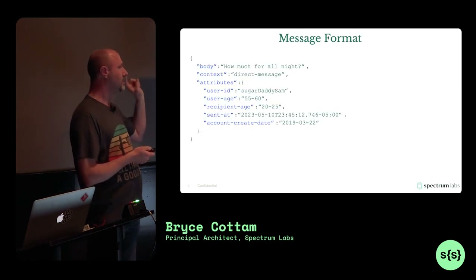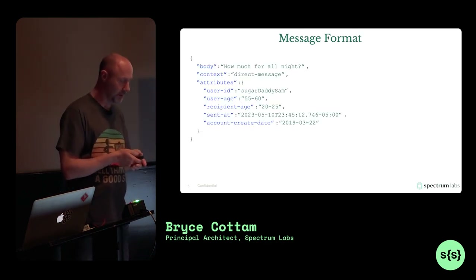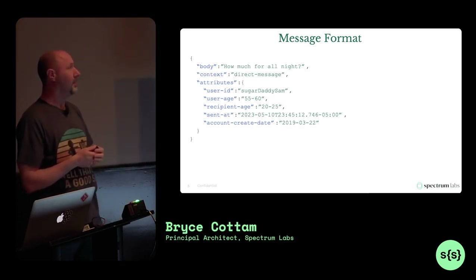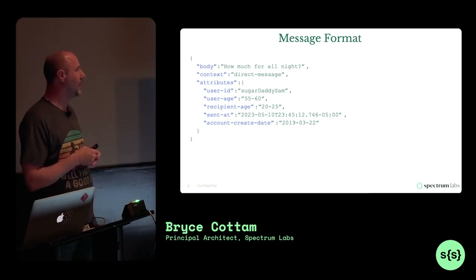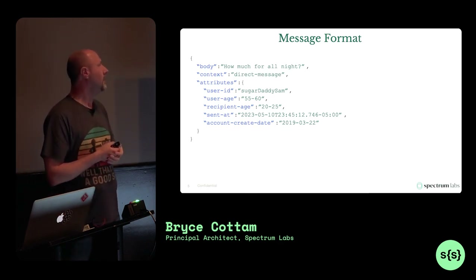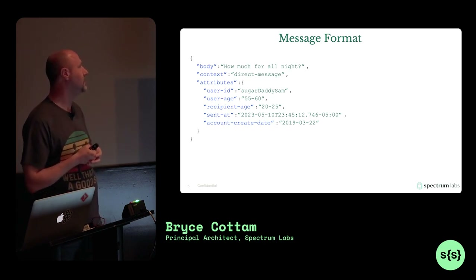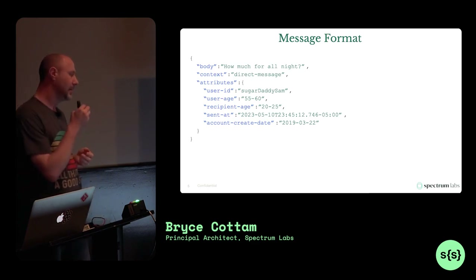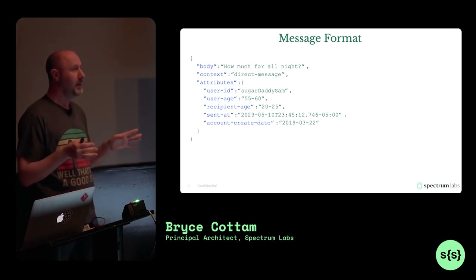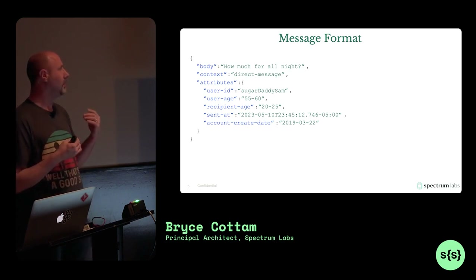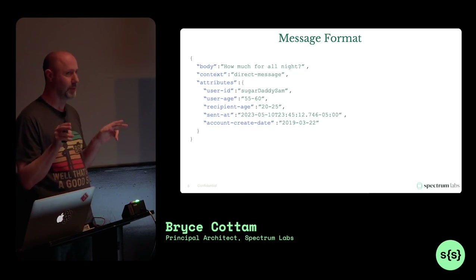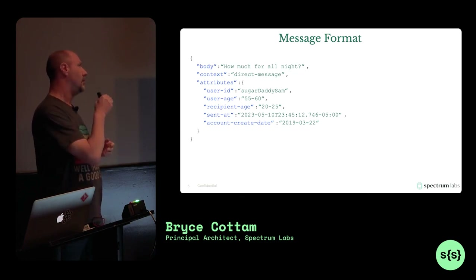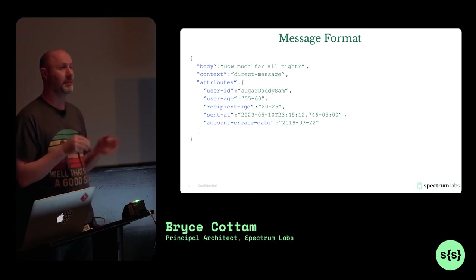Let's start with the schema of the payload we get from users. The most important piece is the body of a message — it includes the text, some first-order metadata like the context in which it was submitted (direct message versus group chat), and then attributes. The attributes were very intentionally freeform. They aren't part of a domain model. There are reserved attribute names like user ID that have special meaning in our system, but attributes are generally completely freeform.